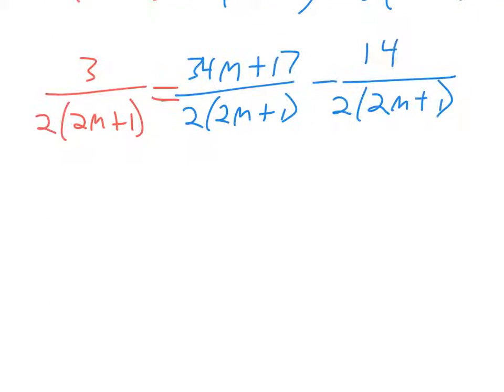And so since we said now we can subtract, it's going to be 17 minus 14. That's going to give us a 3 over here.